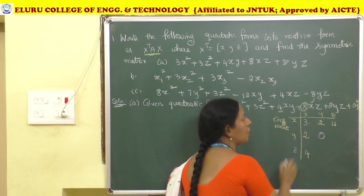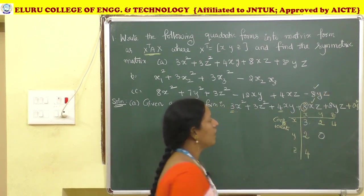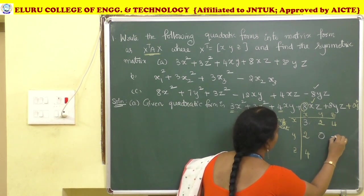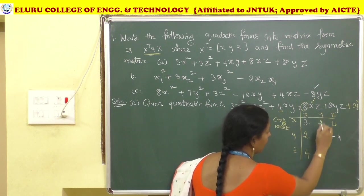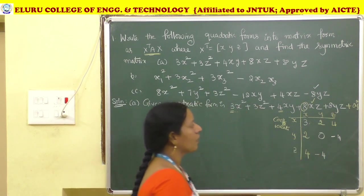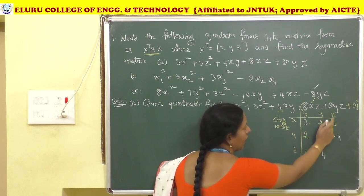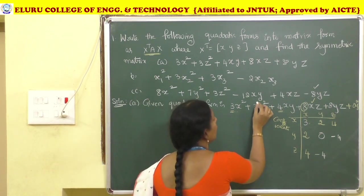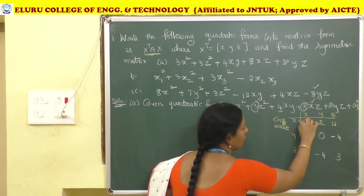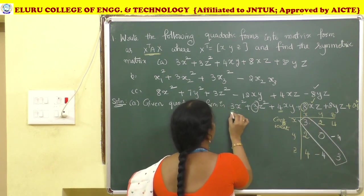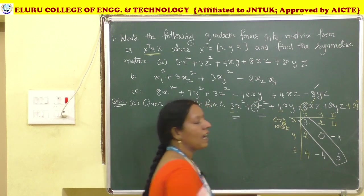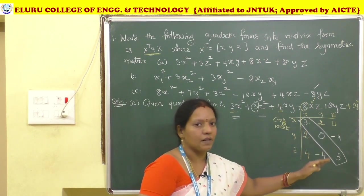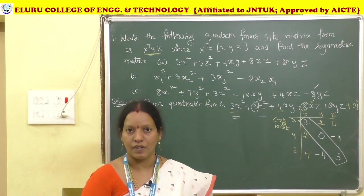For the YZ term, the coefficient is 8, so 8 divided by 2 gives 4. For ZY, similarly 4. For the Z² term, the coefficient is 3. We place X², Y², and Z² coefficients directly, and divide remaining cross-product coefficients by 2.